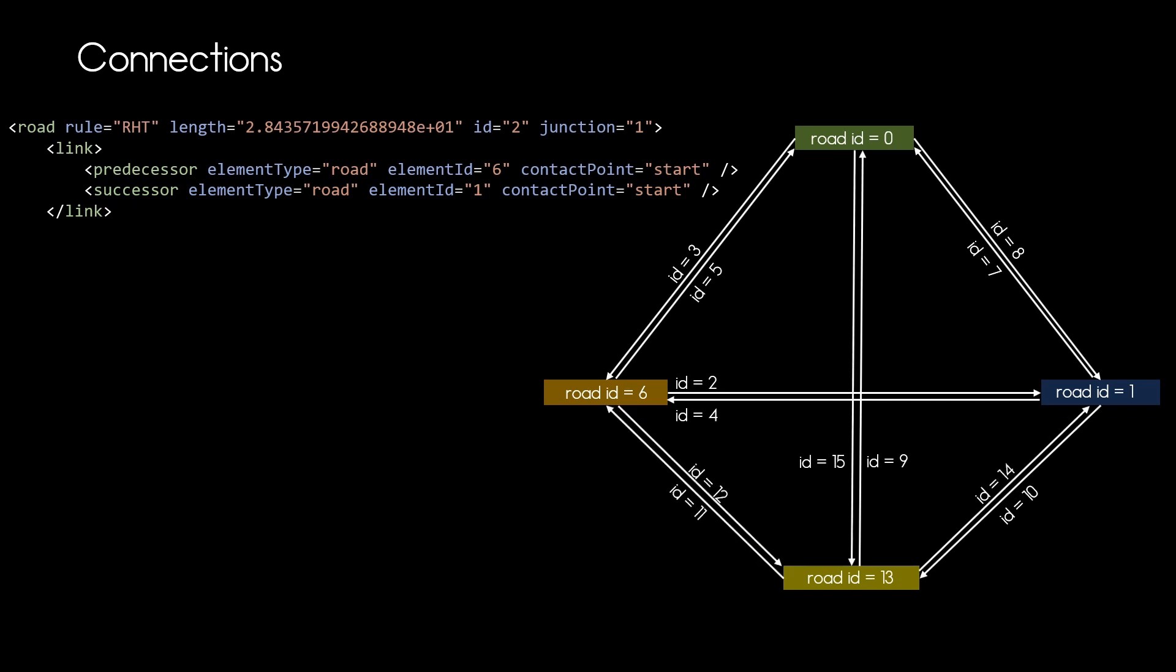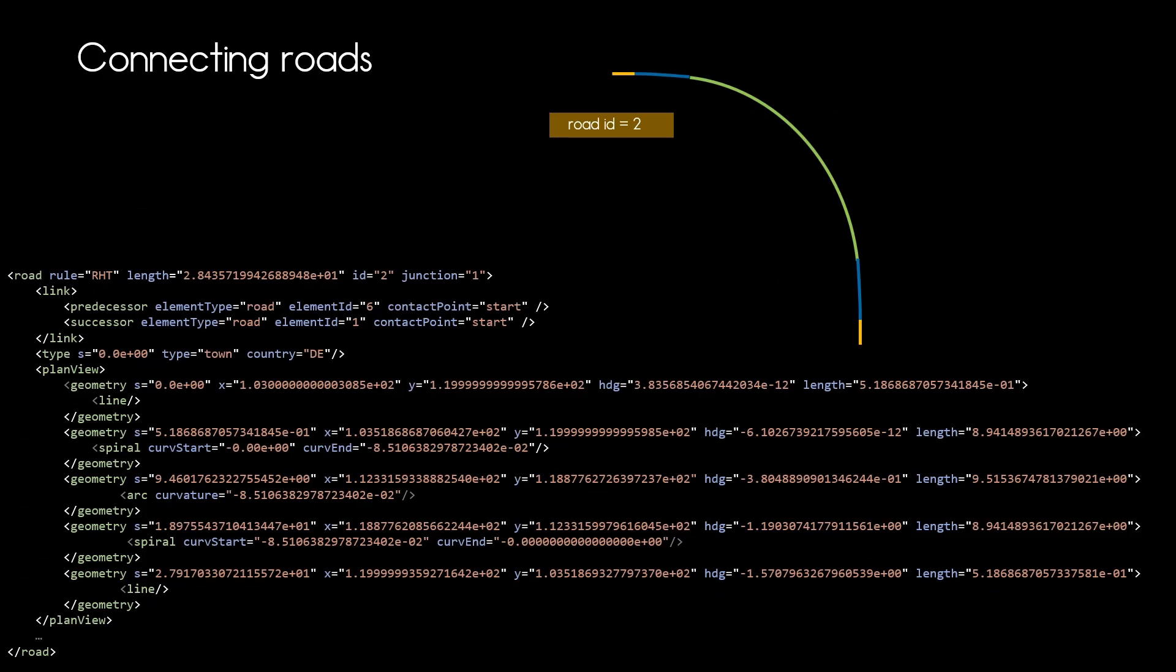Now all the connections are established. But what we see here does not look like the junction we are looking for. So let's have a deeper look into the definition of our connecting roads to see how we can form the junction as we would like to have it. Again we will use the road with ID 2 as an example.